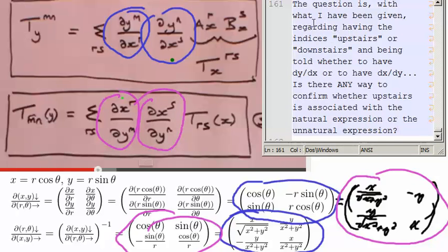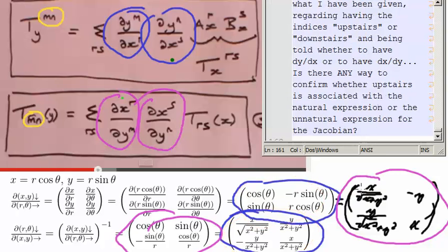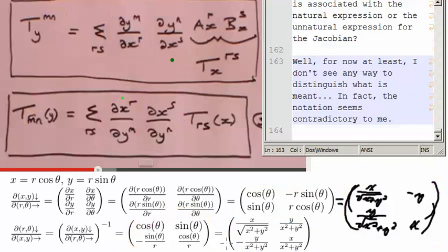The question is, with what I have been given regarding the indices being upstairs or downstairs, and being told whether to have the dy dx, as in this, or the dx dy, as in this, is there any way to confirm whether upstairs is associated with the natural expressions, or the unnatural expressions for the Jacobian? Well, for now, at least, I don't see any way to distinguish what is meant. In fact, the notation seems contradictory to me.